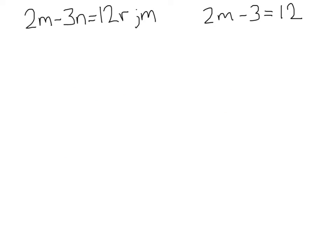It's the same process as you would solve if there weren't any numbers. I mean, if there were numbers, just try to imagine these extra variables as numbers and do the same thing you would do to solve. All right, here we have 2m minus 3n equals 12r, and they want us to solve for m.